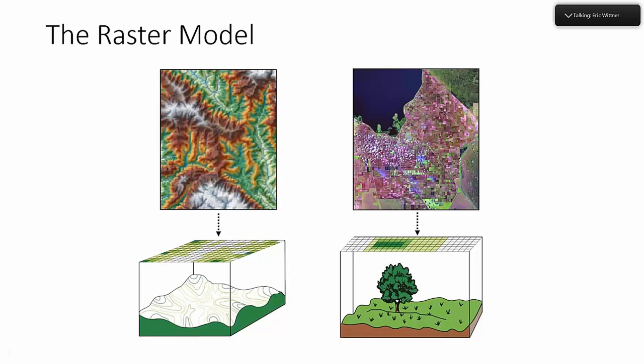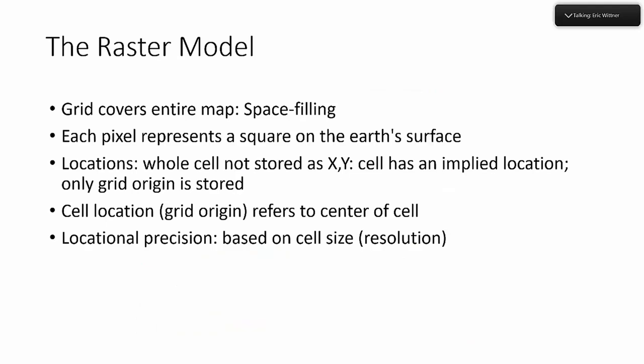The raster format was invented as a gridded representation of the landscape where each cell or pixel is given a value meaning something — be it a measured attribute like temperature, or discrete features with discrete values in each cell. When thinking about the raster data model, there are two ways to conceptualize it: continuous data like elevation on the left, where you have many fractional values measuring a single variable continuously across the landscape; or discrete raster on the right, a classified version of aerial imagery breaking up the landscape into discrete parts like agricultural land, forest, meadow, urban, and housing.